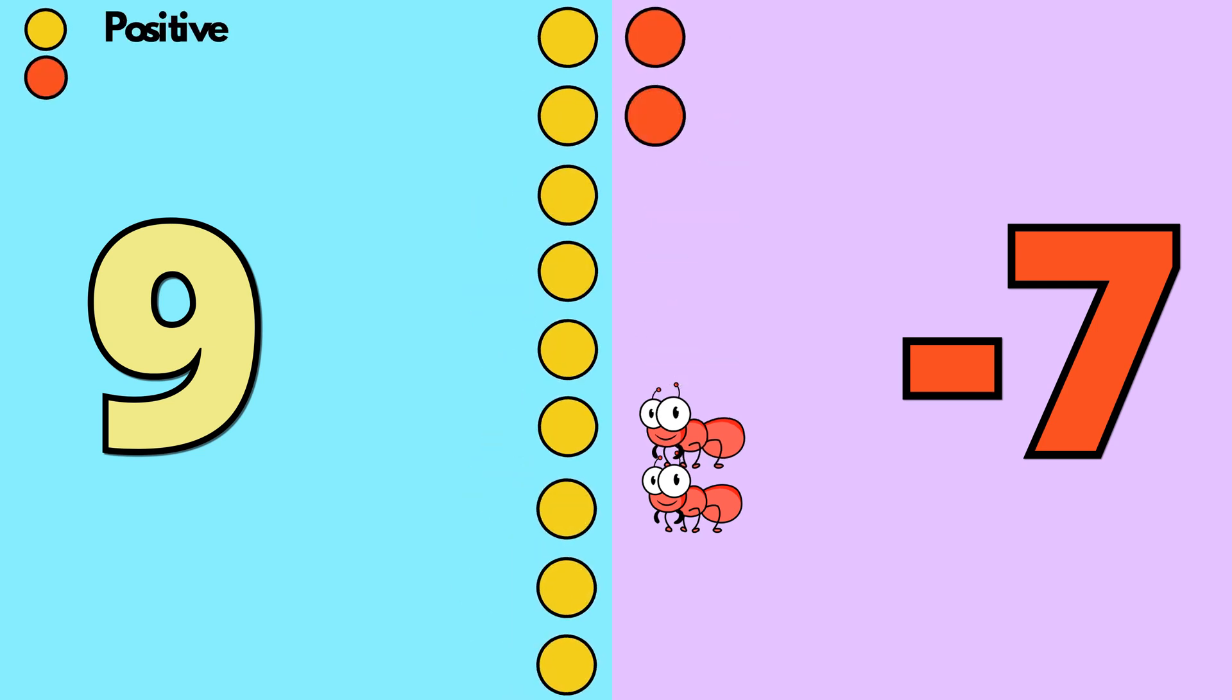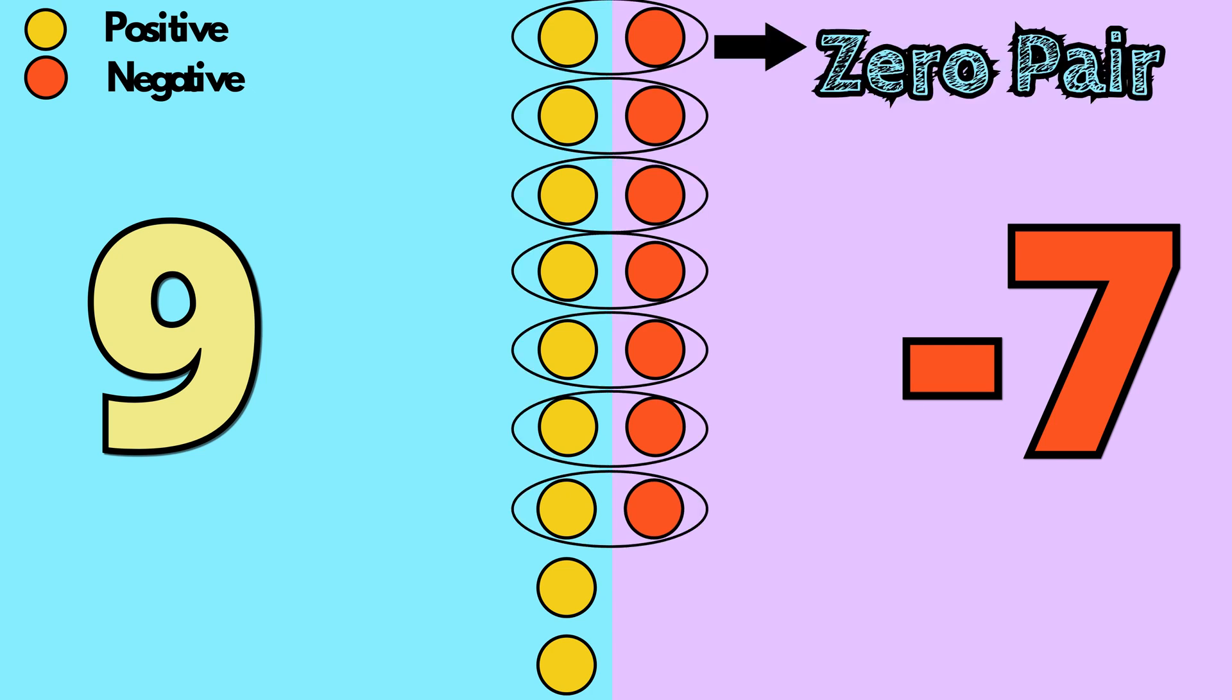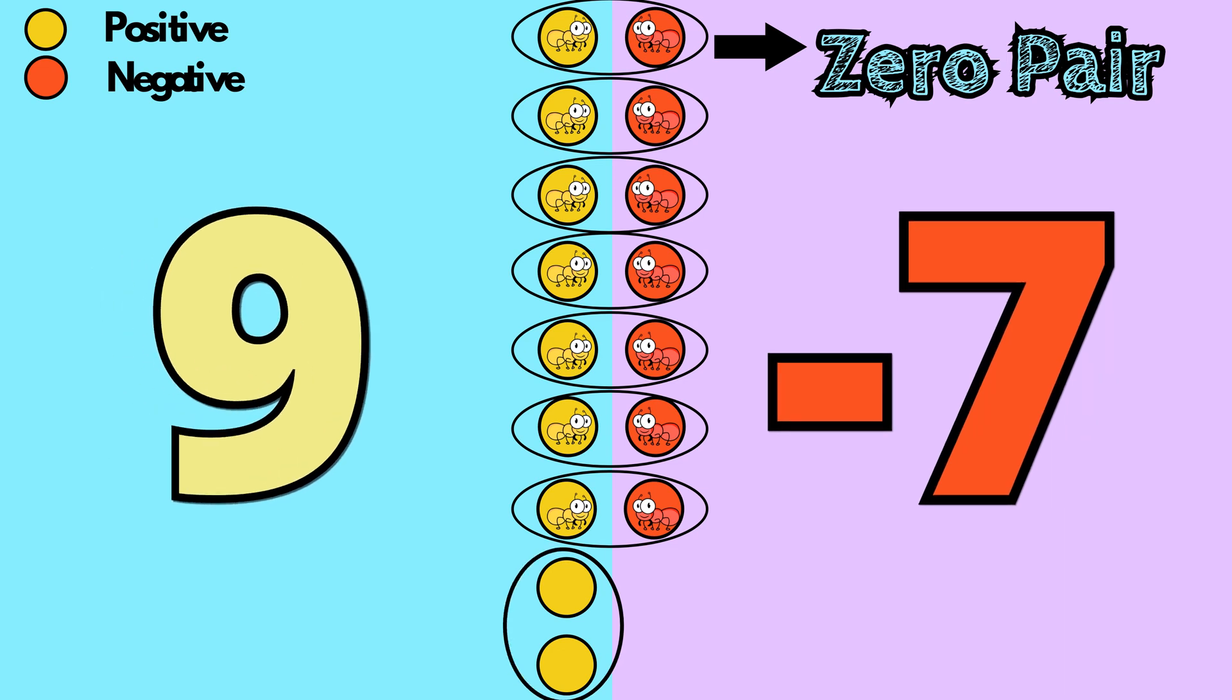and 7 red counters to represent our negative number. We can form a total of 7 zero pairs, or 7 pairs of ants that are locked in battle with each other. That leaves us with 2 yellow counters, or 2 positives. 9 plus negative 7 is equal to 2.